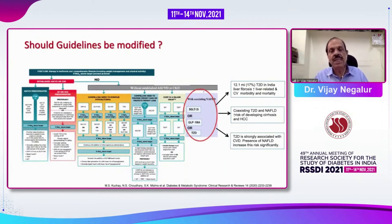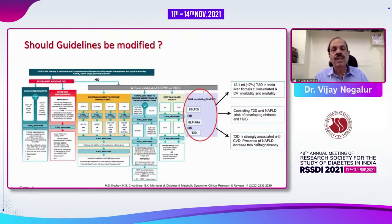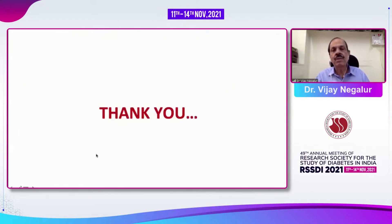We need to modify existing guidelines to accommodate patients with NAFLD. Coexisting diabetes and NAFLD increases the risk of developing cirrhosis and hepatocellular carcinoma. Type 2 diabetes is strongly associated with cardiovascular disease, and the presence of NAFLD increases the risk considerably. These are three reasons why guidelines must include assessment of whether patients have pre-existing NAFLD and address it accordingly. I thank you for your patient listening and will be happy to answer questions.